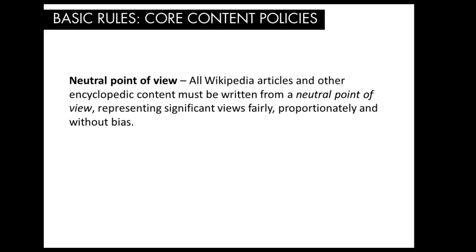Now let's take a moment to talk about some of the basic rules of Wikipedia editing. We'll start by discussing the three main core content policies. The first core content policy is that you should write all articles with a neutral point of view. All editors will have their own points of view, but you should strive in good faith to provide complete information and not promote one particular view over another. Some helpful tips for maintaining a neutral point of view are to avoid stating opinions as facts, avoid stating seriously contested assertions as facts, avoid stating facts as opinions, prefer non-judgmental language, and indicate the relative prominence of opposing views.